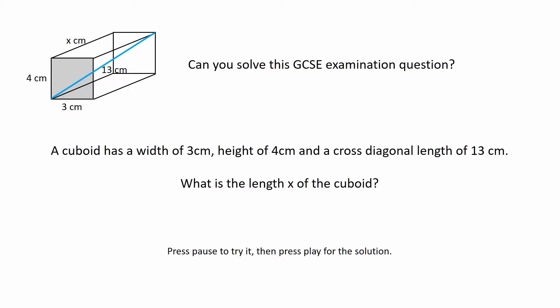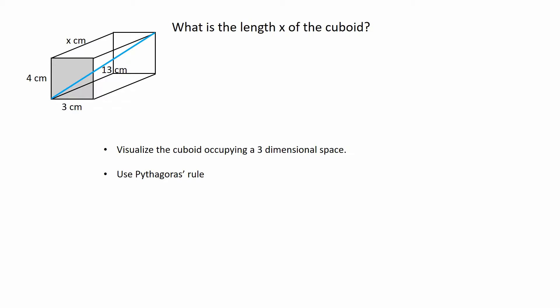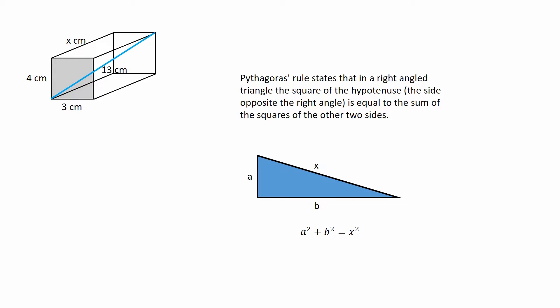You need to be able to see the cuboid in a three-dimensional space and apply Pythagoras' rule, which states that in a right-angled triangle the square of the hypotenuse is equal to the sum of the squares of the other two sides.